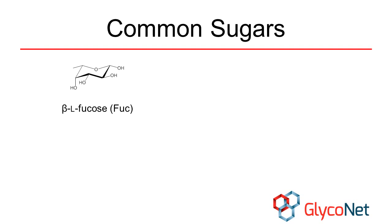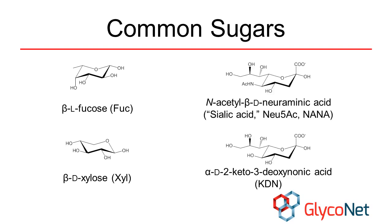The sugars we have looked at so far have all been hexoses, which means they have 6 carbons. Five-carbon sugars, called pentoses, are also frequently found in nature. One of the most common is D-xylose. Sugars can also have more than 6 carbons. The sialic acid family of sugars has a 9-carbon backbone. Two prominent members of this group are N-acetylneuraminic acid, which is often simply called sialic acid, and 2-keto-3-deoxynonic acid, or KDN for short.